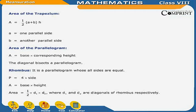Area of the parallelogram: A is equal to base into corresponding height. The diagonal bisects a parallelogram. Rhombus: It is a parallelogram whose all sides are equal. Perimeter P is equal to 4 into side. Area A is equal to base into height, and also Area is equal to half into D1 into D2, where D1 and D2 are diagonals of the rhombus respectively.